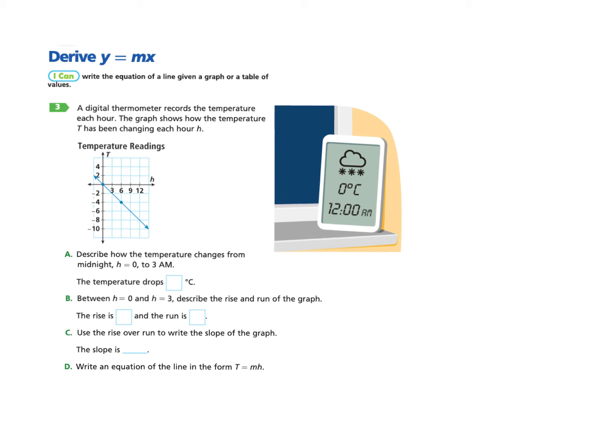Alright, so hopefully you thought about that. You can see that at midnight the temperature was exactly zero - zero degrees Celsius at midnight. The question is, what about from zero to three a.m.? Well, here's three a.m., and my t value when the h is three appears to be negative two. So the temperature drops two degrees - this word 'drops' here is telling me that it's negative two.